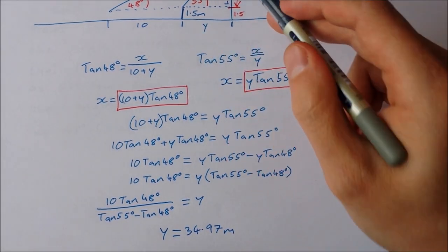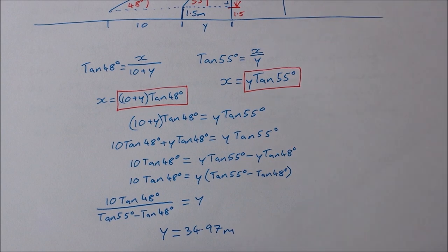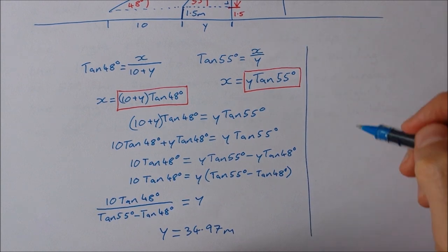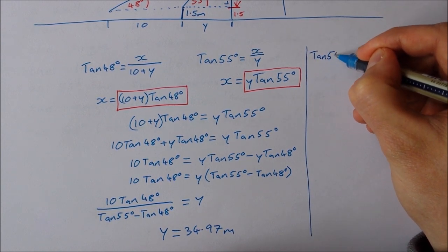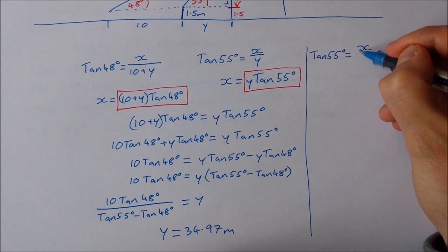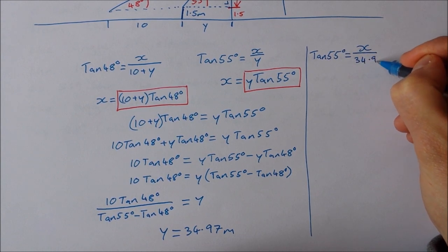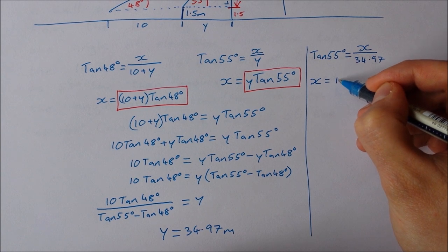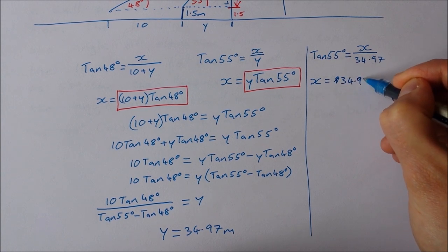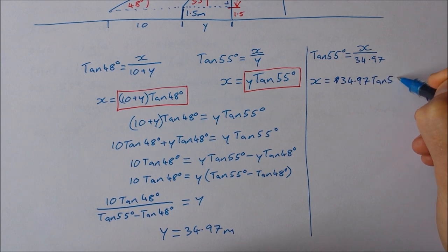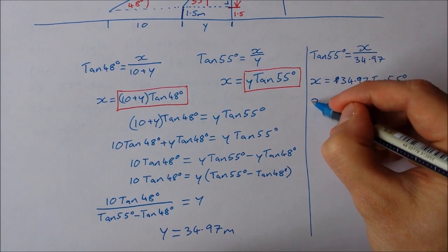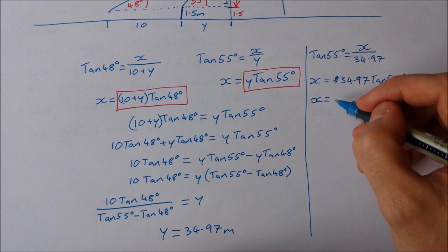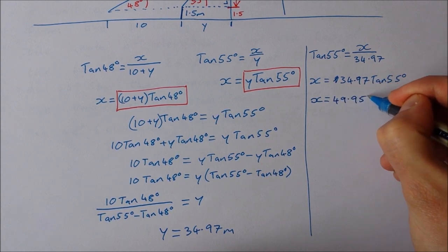Now I want to find x. So in order to find x I can sub back into this one here. I can say tan 55 is equal to x over 34.97. So multiply across by 34.97. x is equal to 34.97 tan 55 degrees, which equals 39.95 meters.